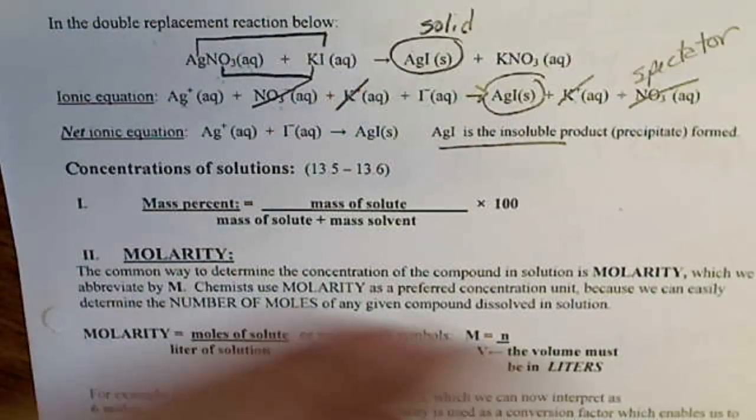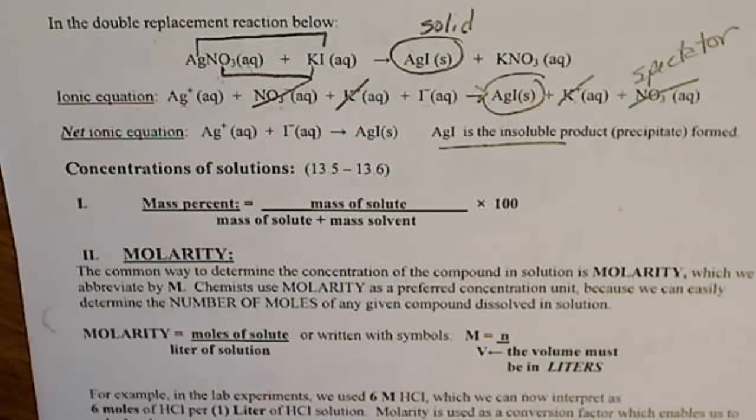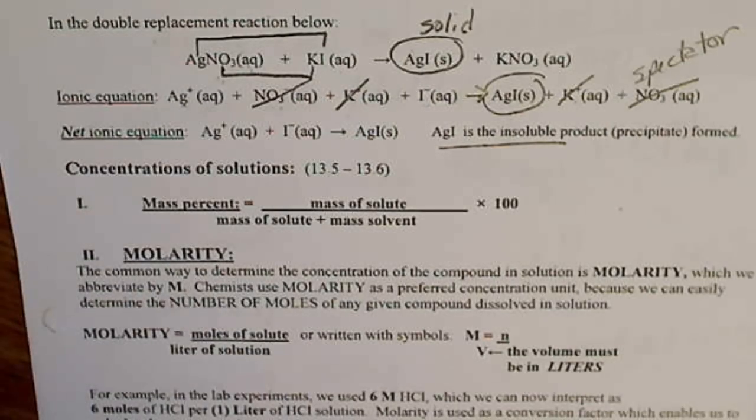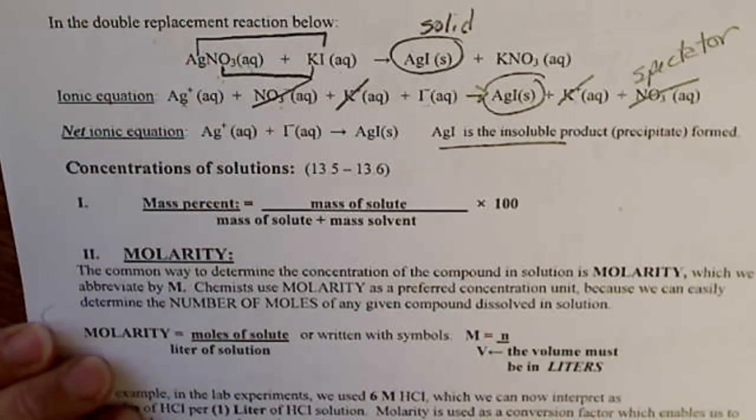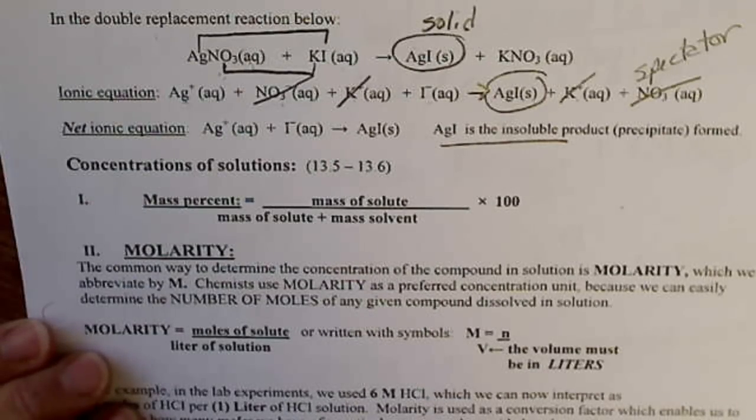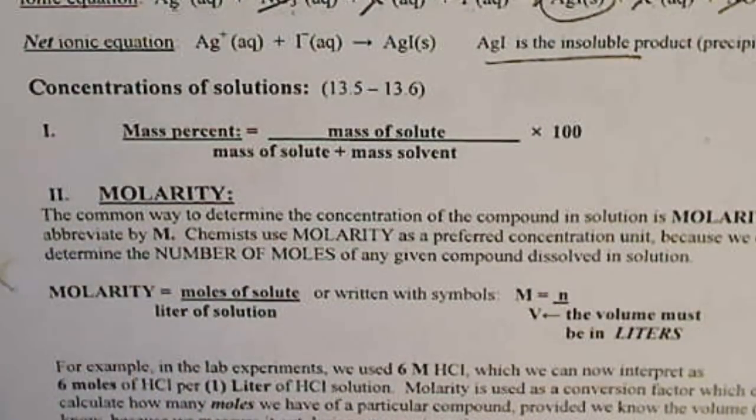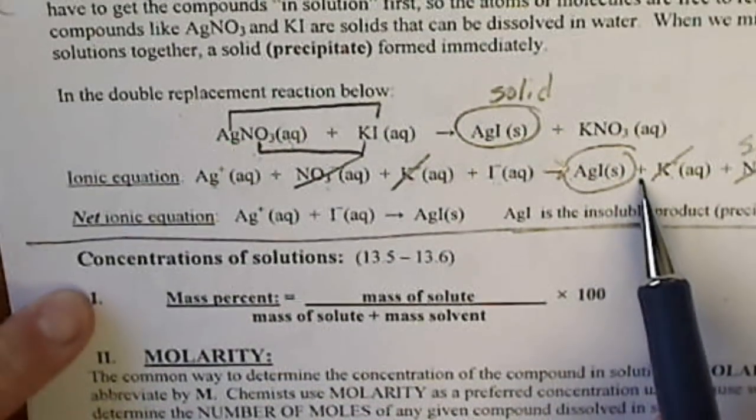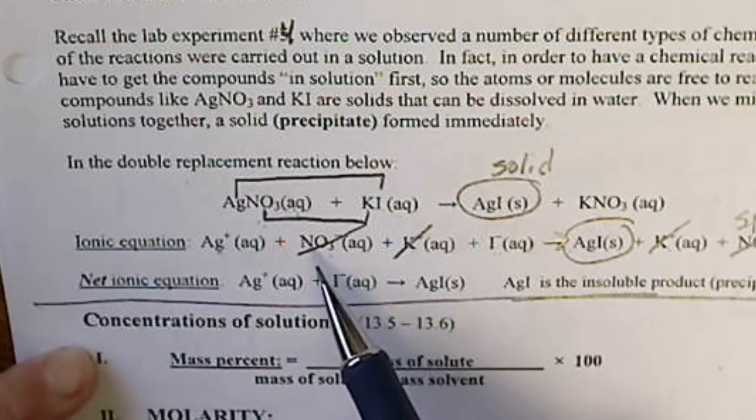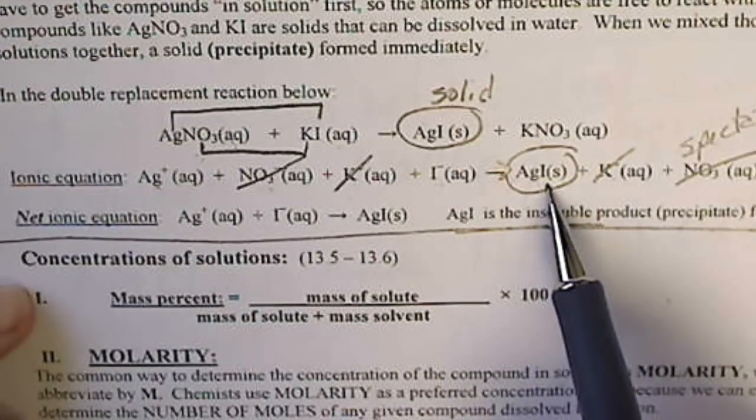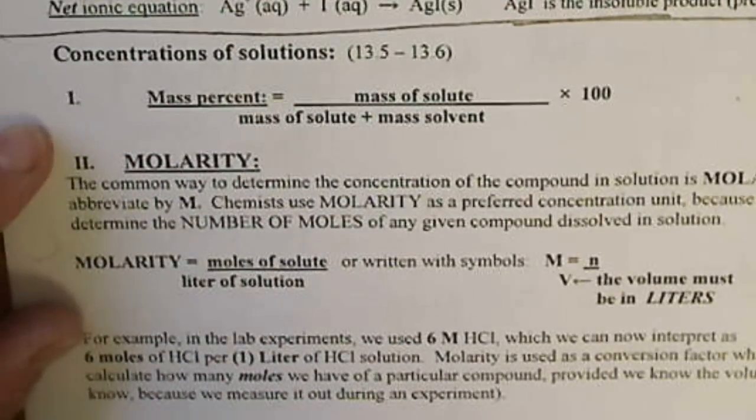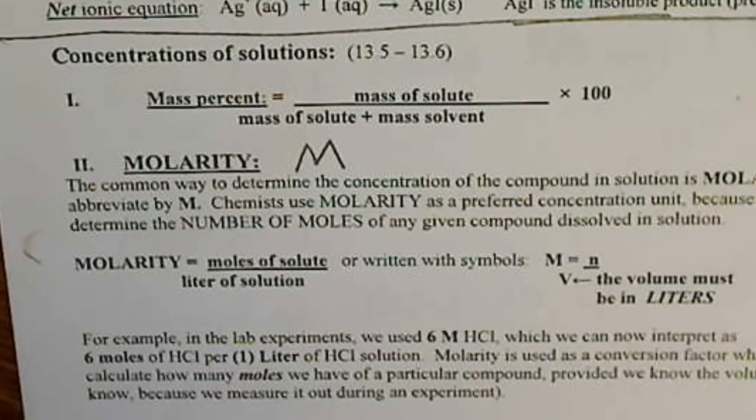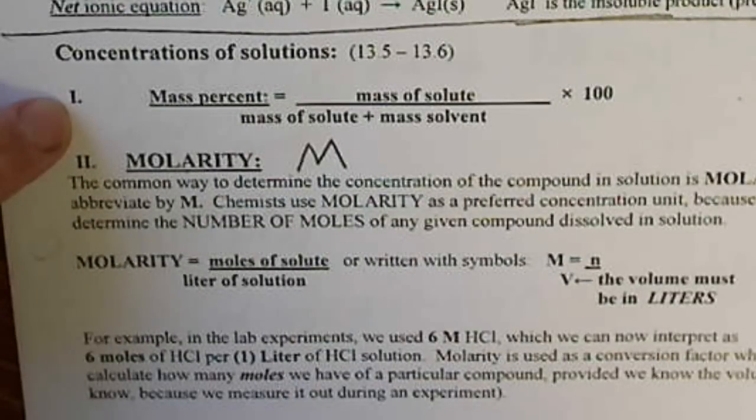We're not going to be terribly concerned about that in this chapter, but what we are going to be concerned about is talking about how concentrated a solution is. When we talk about the concentration of a solution, that's a whole different idea than talking about a reaction. This just happens to be a reaction where we have two soluble salts combining to form an insoluble product. Most of the chapter is going to be focused on this molarity. That is the capital M that's written on the bottle. But before we get to that, we're going to look at one common concentration unit, and that's mass percent.